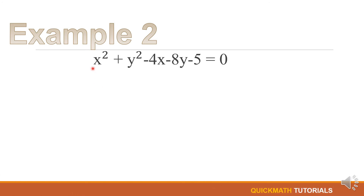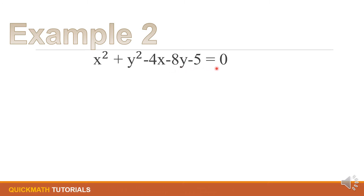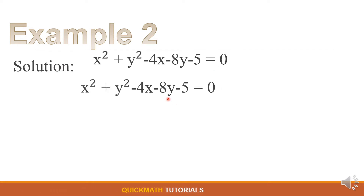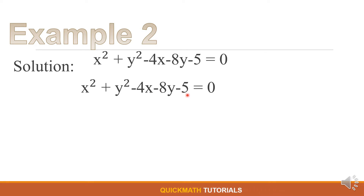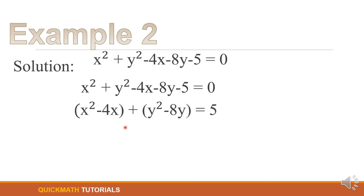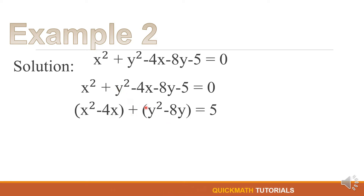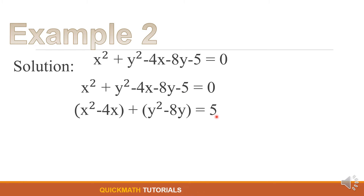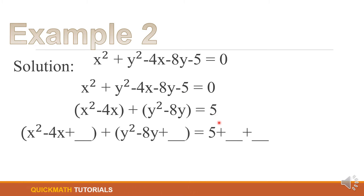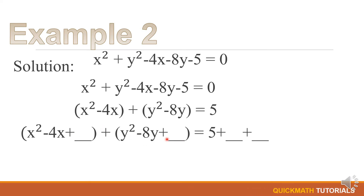For our second example we have x² + y² - 4x - 8y - 5 = 0. For our first step, we will group this equation with the same variable, and for those who do not have a variable — the constant — we will put them to the right side. So we have the group of x: x² - 4x, and the group of y: y² - 8y, and since the constant is negative 5 it becomes positive 5. We will add one blank for x and one blank for y, and to be fair we will also add two blanks on the right side.